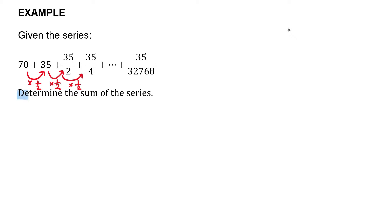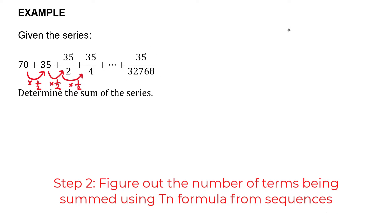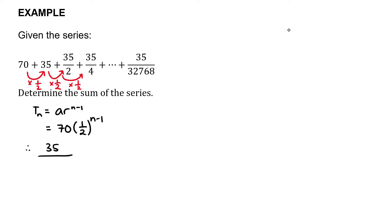The question asks us to determine the sum of the series, but we aren't given the number of terms — only the last term. Whenever the last term is given, use the Tn formula to find n. For a geometric sequence: Tn = a × r^(n−1) = 70 × (1/2)^(n−1). Setting this equal to the last term 35/32768 gives 70 × (1/2)^(n−1) = 35/32768.